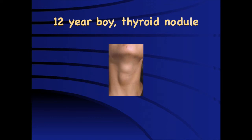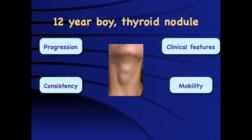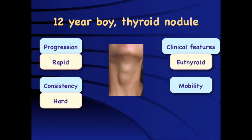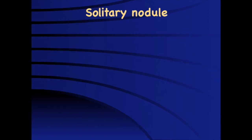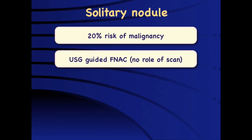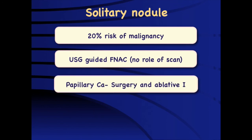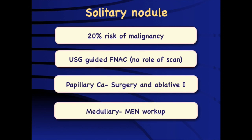Solitary thyroid nodules are uncommon in children but carry a very high risk of malignancy, requiring careful evaluation. Assessment includes progression, consistency, clinical features, and mobility. A rapidly progressive, hard, euthyroid, and fixed nodule carries higher malignancy risk. There is a 20% risk of malignancy in children with a solitary thyroid nodule; ultrasound-guided FNAC is the investigation of choice — there is no role for a scan. If papillary carcinoma is identified, surgery and ablative treatment should be considered. If medullary carcinoma is found, workup for rare associations such as multiple endocrine neoplasia is required.